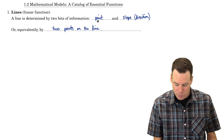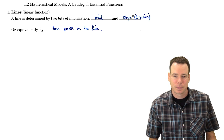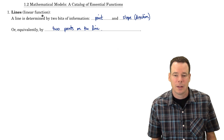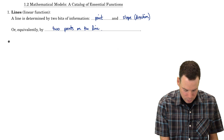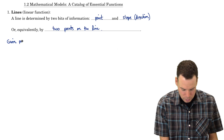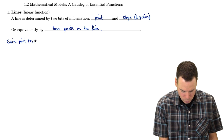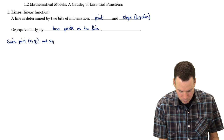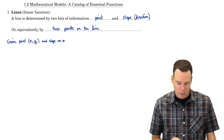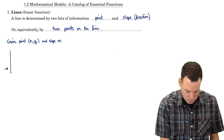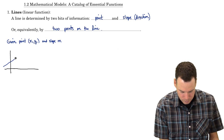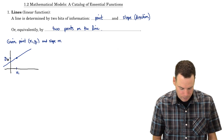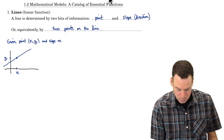Now, depending on which situation we're in — suppose I'm given a point and the slope — how do we write down an algebraic representation of the linear function? So we're given a point (x₁, y₁) and we're given the slope of the line, say m. We've got this line, we know a point on it — which is x₁, y₁ — and we know the slope.